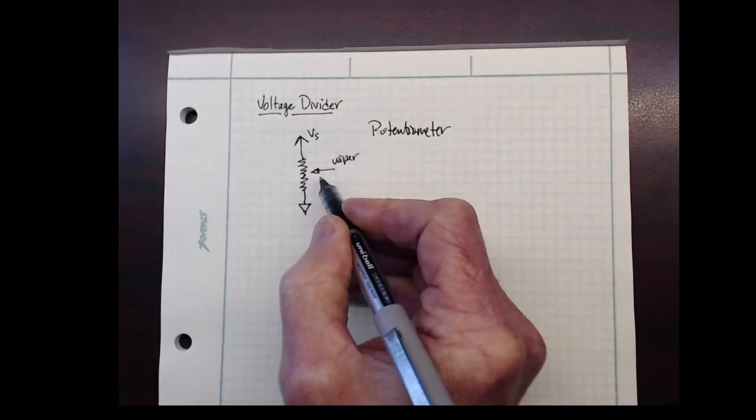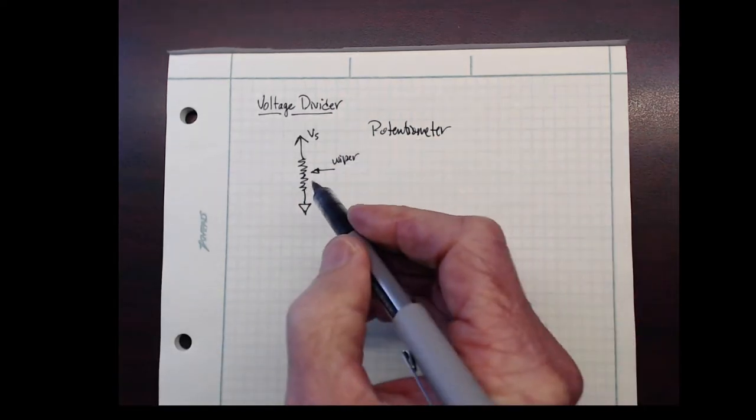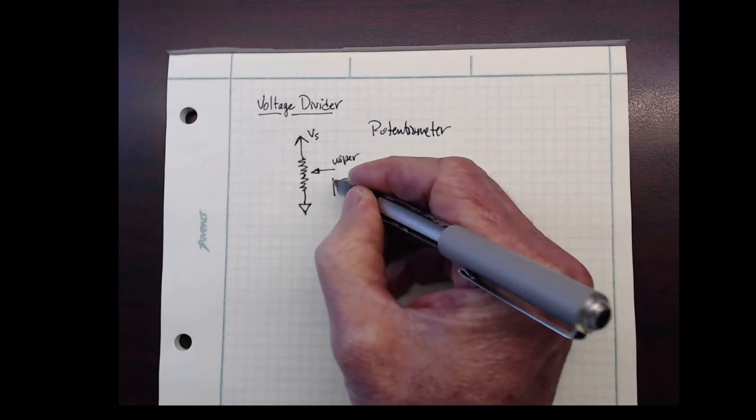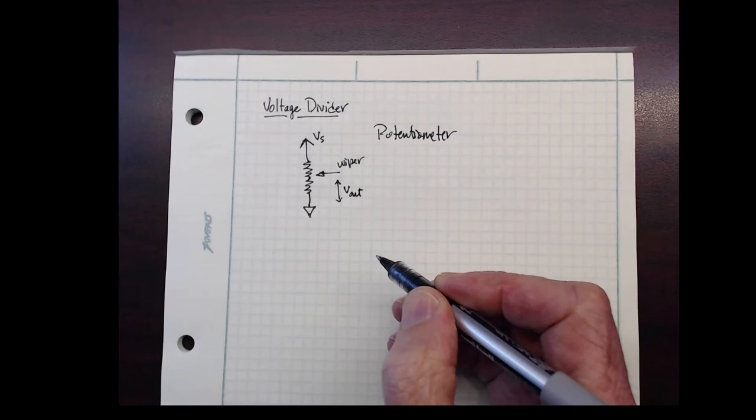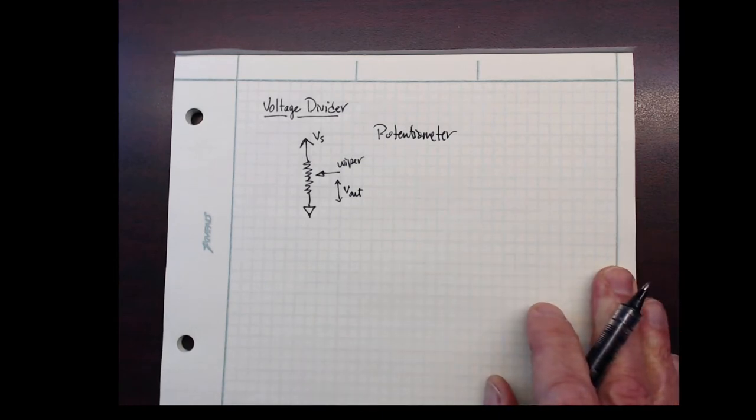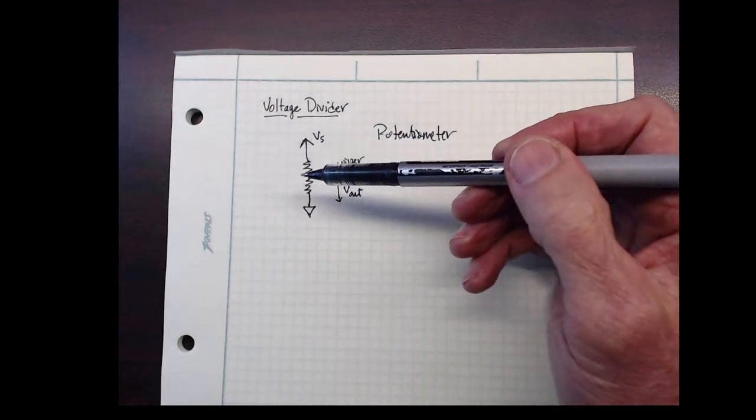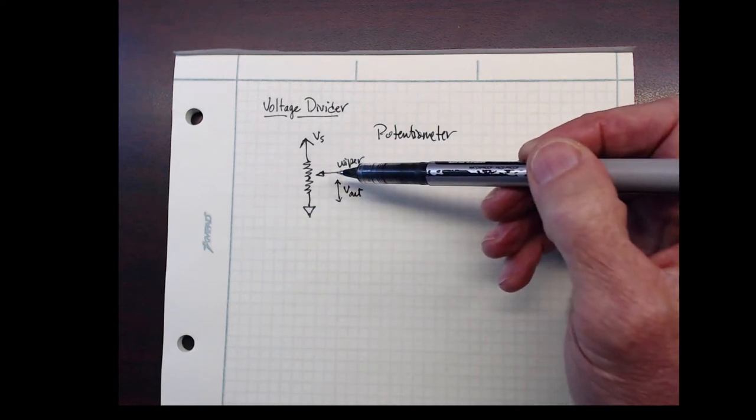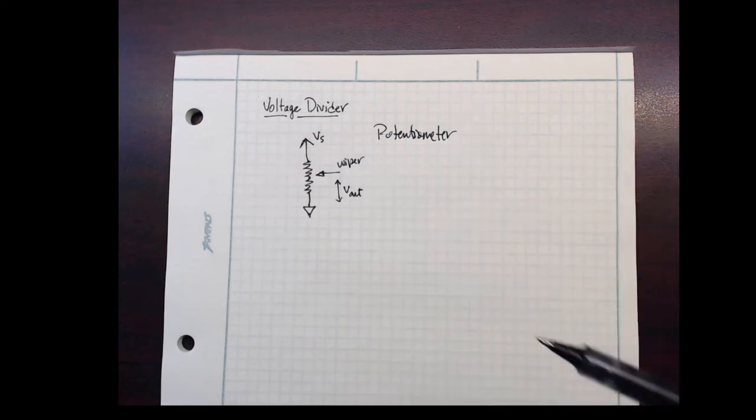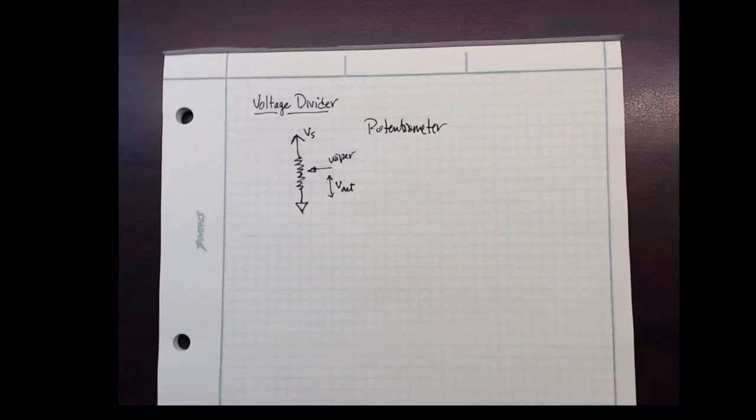By moving the position of the wiper, we can measure an output voltage on that wiper relative to ground. A typical potentiometer has three connections: the source Vs, the ground, and then a wiper. If we measure the voltage between the wiper and ground, we can have a variable. By adjusting the knob or slider, we get a different output.